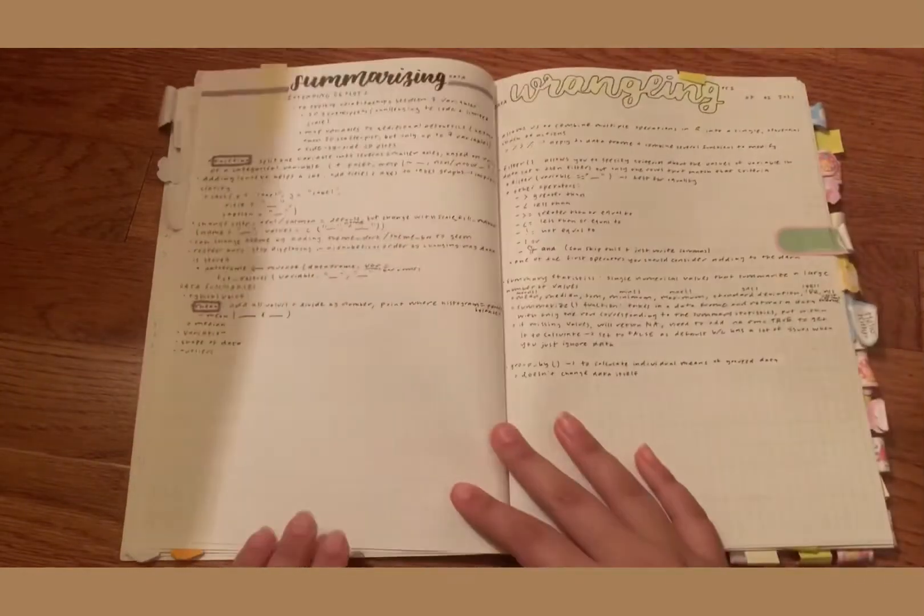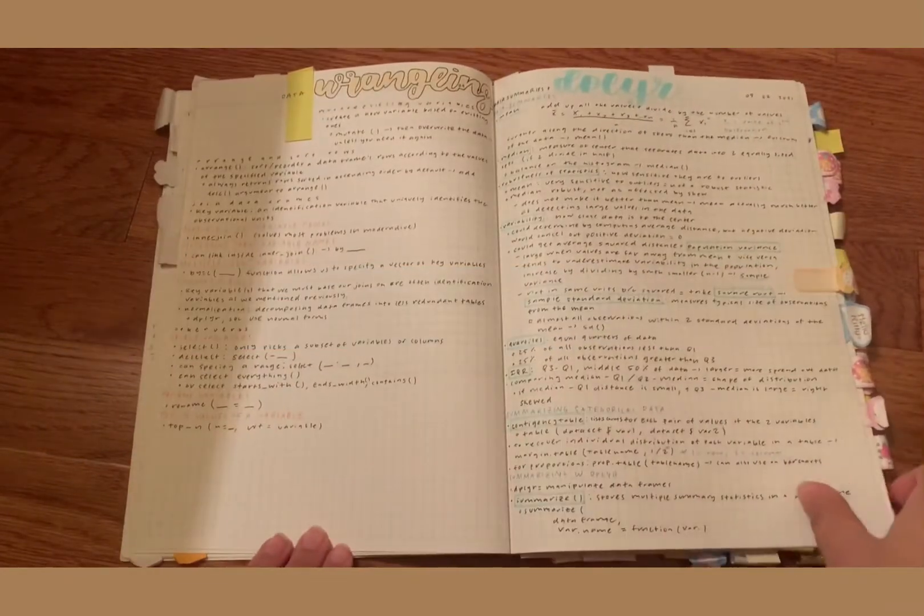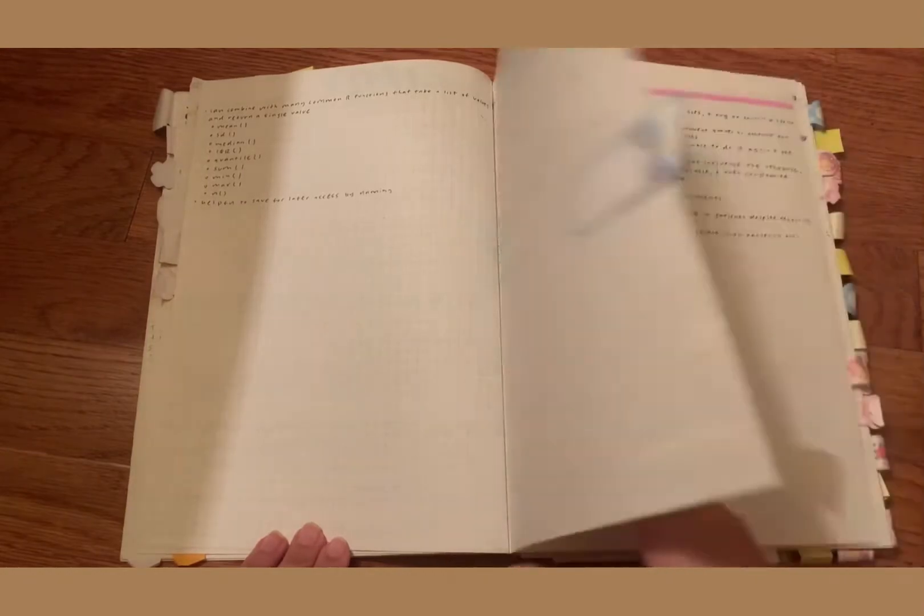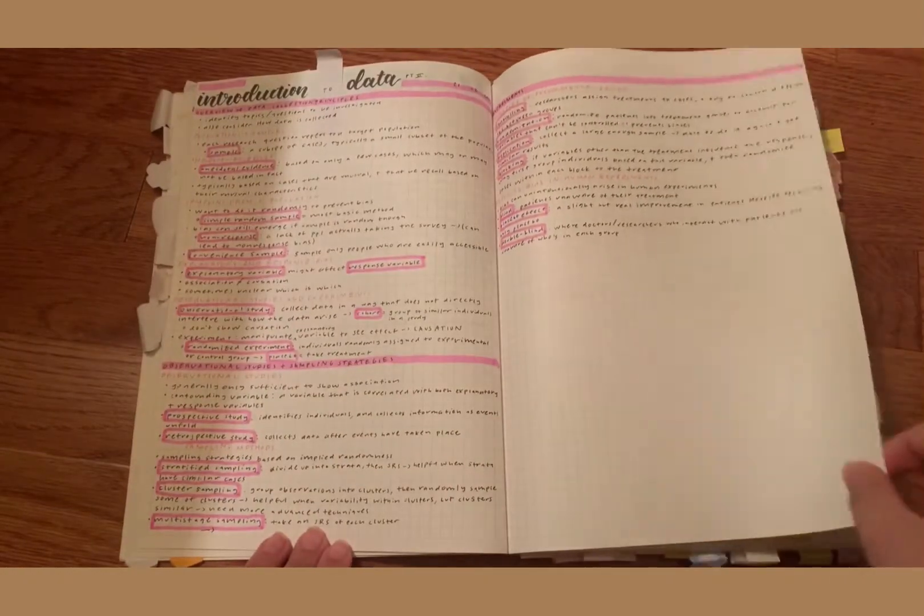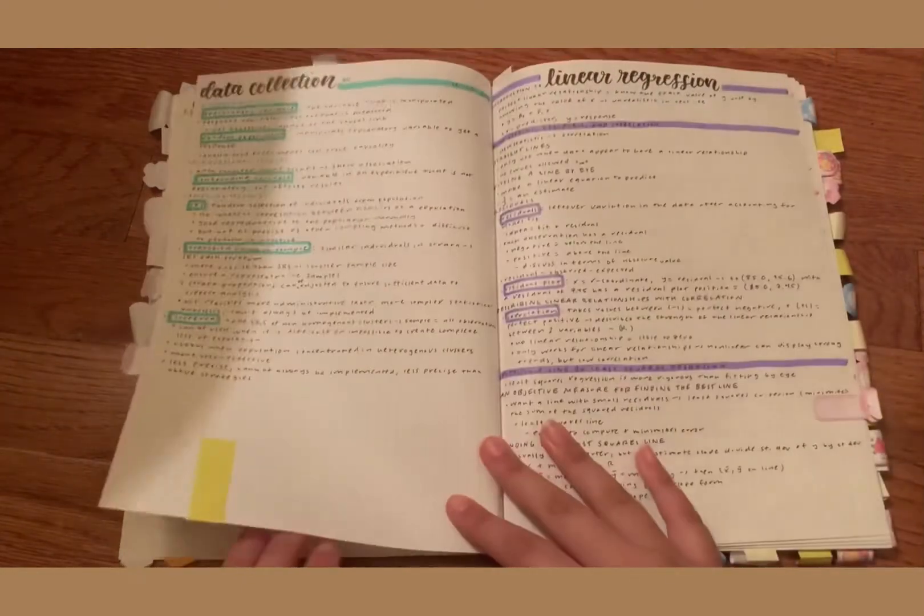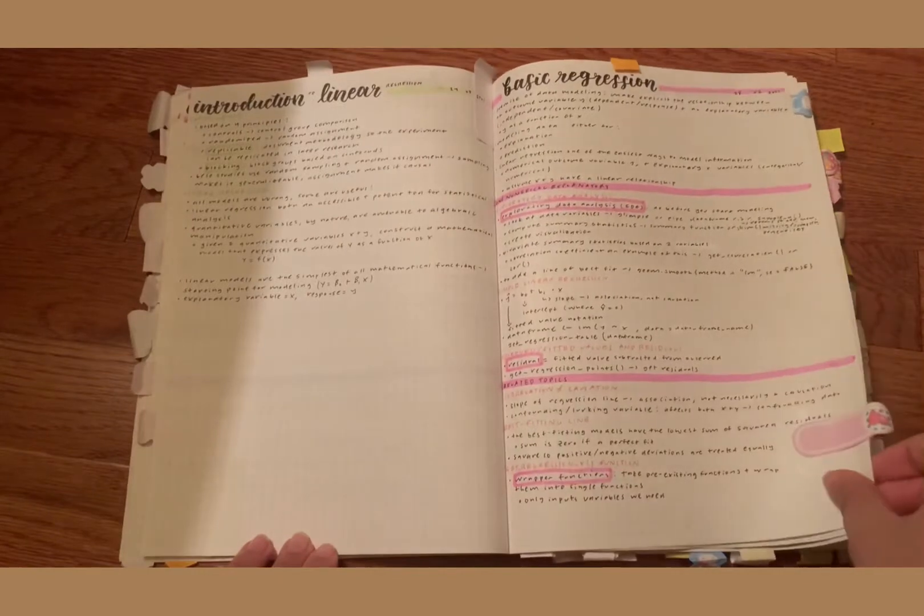My third tip is that handwriting your notes is more effective than typing your notes, in most cases. In some cases, there are people who genuinely do need to type their notes, and that's okay too. But most studies show that typing your notes in lecture means that they're less effective at helping you remember the information that's covered, and this is because when you type, you're more likely to copy down information verbatim because most people type faster than they can write.